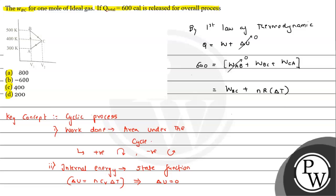Using W_BC = nRΔT, with n = 1 mole and R = 1.987 cal/(mol·K), which we approximate as 2, and ΔT = −100 K, W_BC comes out to be −200 cal. Adding this to the remaining term gives W_BC = 600 + 200 = 800 cal. So the answer is 800, which matches option A.